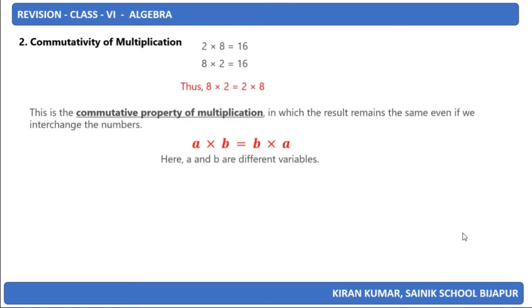Similarly, we have commutativity of multiplication. The product 2×8 is 16. 8×2 is also 16. Thus, 8×2=2×8. This is the commutative property of multiplication. In general, it is a×b=b×a, where a and b are different variables. For example, if I consider 18×12, it is 216. 12×18 is also 216. Thus, 18×12=12×18.